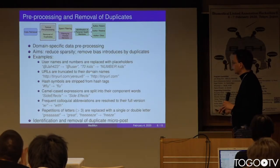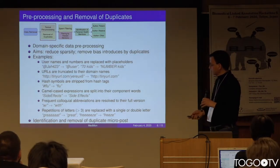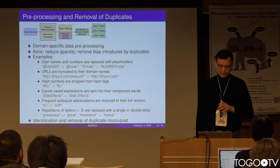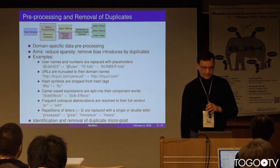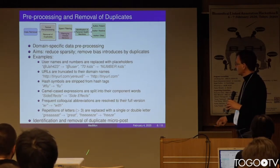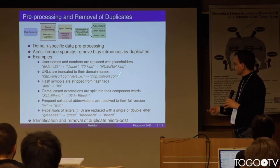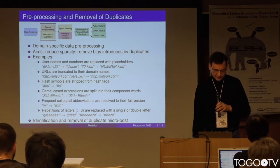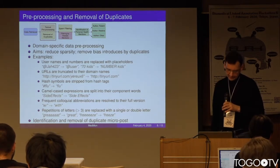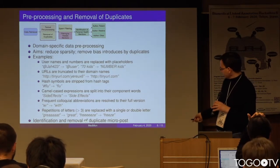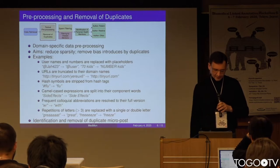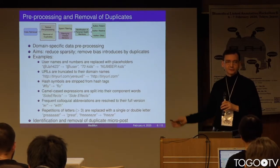We start with the removal of duplicates and some pre-processing steps which are very common when dealing with social media, especially tweets. You typically have a sub-language in this type of media where you have modified usernames, URLs, hashtags, camel case expressions, and emphatic expressions with duplication of vowels. All these are normalized in order to cope with them better.